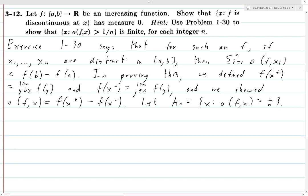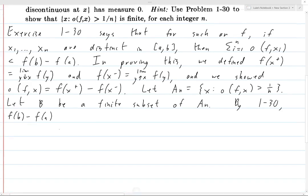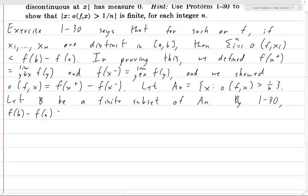So the set of points x such that the oscillation of f at x is greater than 1 over n. Now, let B be any finite subset of An.